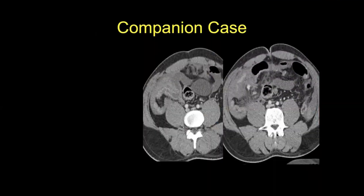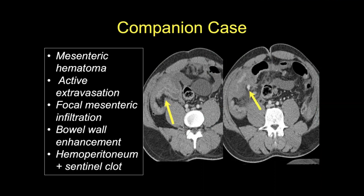A companion case with a more obvious injury: note the active bleeding within the mesenteric hematoma, hyperemia of the bowel loops, and hemoperitoneum consistent with active bleeding within the mesentery, as well as associated bowel injury. Patients with active extravasation within the mesentery are more often treated surgically because of the frequent underlying association of bowel injury.